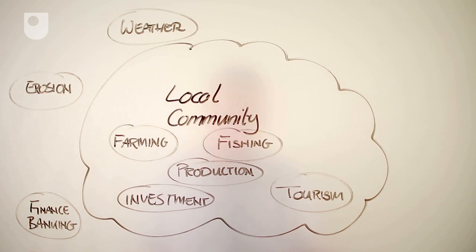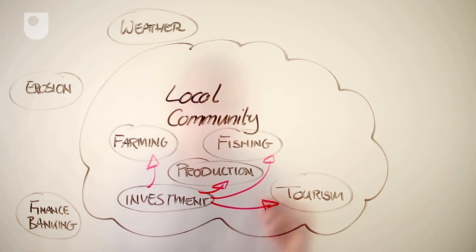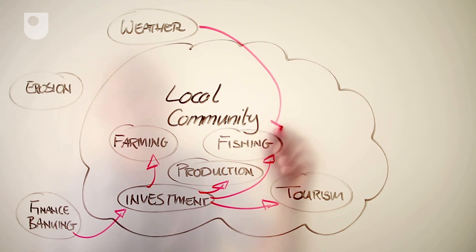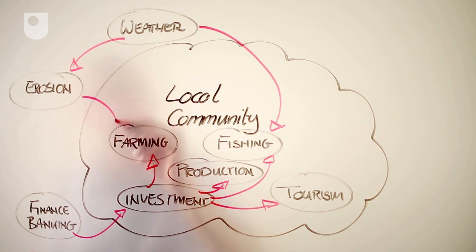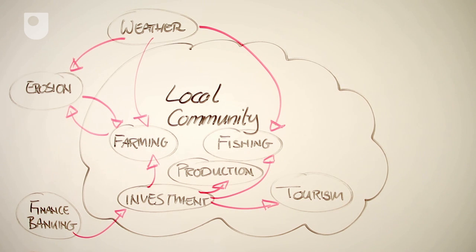Working from the basis of the systems map, I can now start to think about where the major influences are within that map. Investment is where I start — it affects just about everything within my local community context: farming, production, fishing and tourism. And of course the external force there is banking. Weather has a huge impact too — affecting the community, fishing, farming, and erosion. But there's also this link now between farming and erosion which has gained clarity. Weather and finance and banking are the great forces I'm up against as I start to consider the complexities of this context.